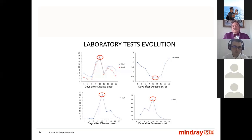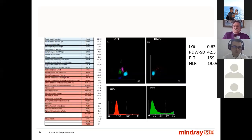CRP, shown at the bottom right, shows the peak of possible bacterial co-infection, and after, it recovers to normal values.